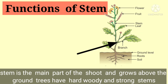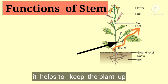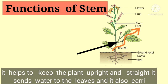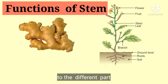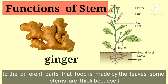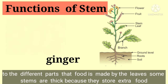Trees have hard, woody and strong stems. The stem helps to keep the plant upright and straight. It sends water to the leaves and also carries food to the different parts of the plant. That food is made by the leaves.